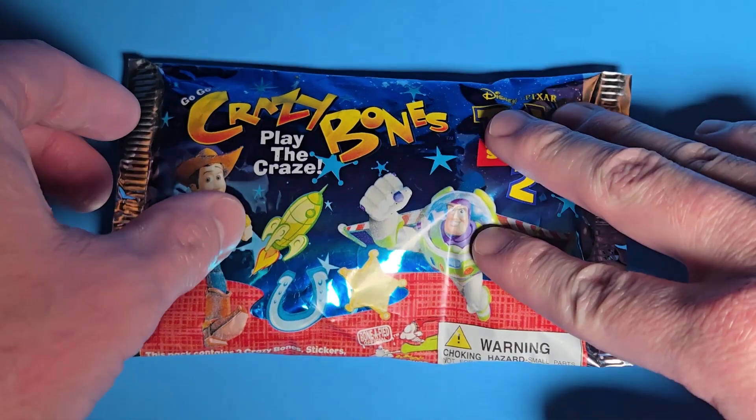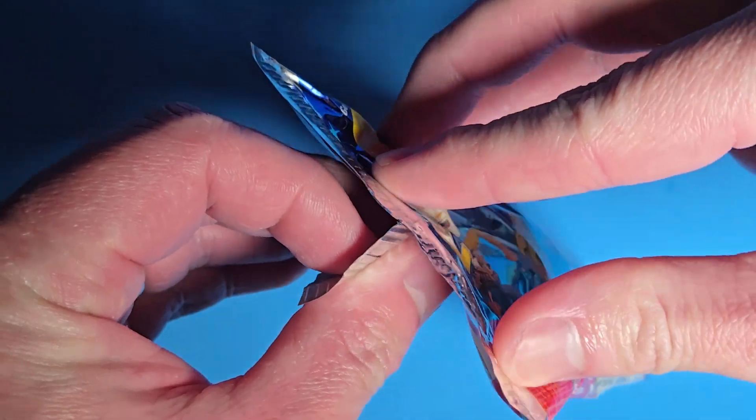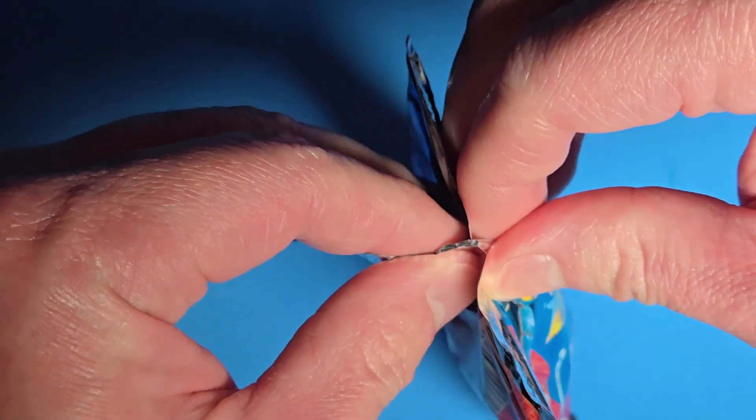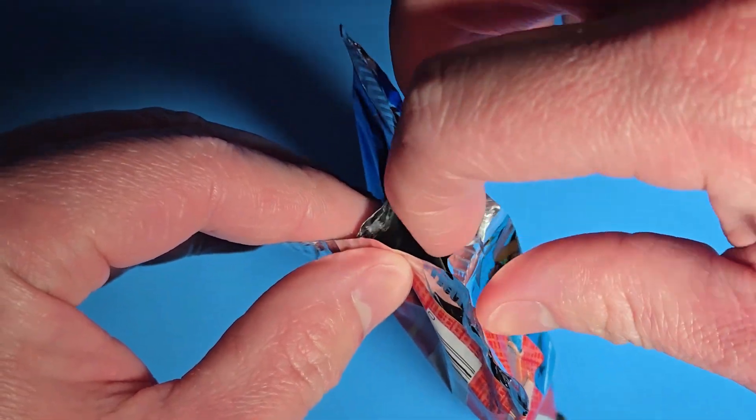I wanted to end this video by opening a sealed pack of Toy Story 2 Crazy Bones. Each pack comes with three bones inside. I'm hoping to get a purple Zerg or gold badge. I like having colors that correlate with the character's color palette.